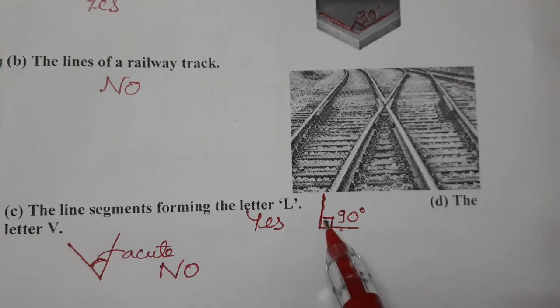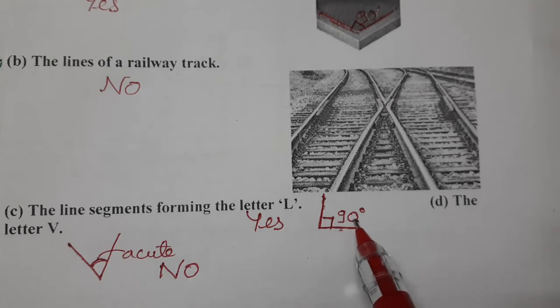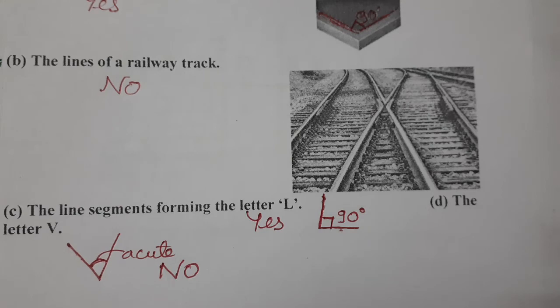And letter L is making an angle of 90 degrees. So children, I hope you understood question number one. This is about perpendicular lines. So the term is clear to all of you. Thank you so much for watching the video.